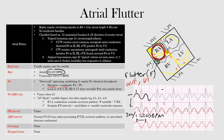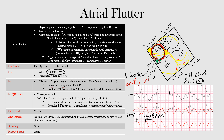On the EKG we can see one flutter wave, then a QRS, then one, two flutter waves before the next QRS — this is a 2:1 block. With an atrial rate of 300 and 2:1 conduction, the ventricular rate is 150. There are two thick lines between QRS complexes, confirming 300 divided by 2 equals 150 beats per minute. The 2:1 block is the most common pattern.